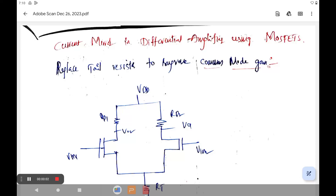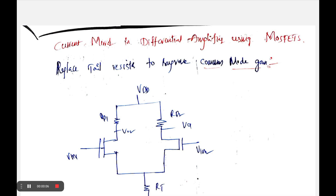Hi friends, welcome to GMK Stories. In this video we are going to continue our discussion on differential amplifiers designed with the help of a current mirror. The purpose of the current mirror in a differential amplifier is to maintain a constant current in the circuit. We have already discussed current mirror circuits previously.